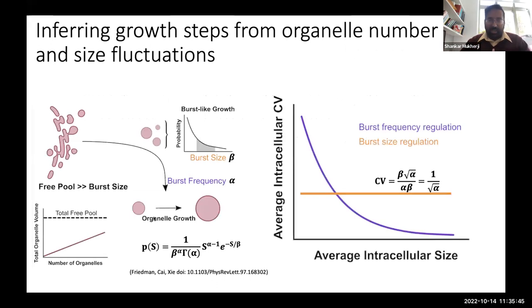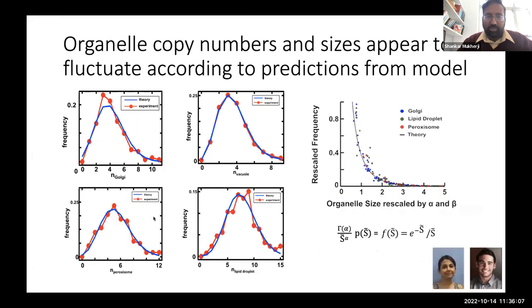Just a brief highlight of work at the single organelle level: we've built mathematical models and tested them with quantitative data. We can understand something about copy number control or size control of these structures. These models do a reasonably good job of predicting key features of actual experimental data — we can quite accurately predict things like the copy number distribution of organelles and features that unify the description of different organelles in terms of their size regulation.